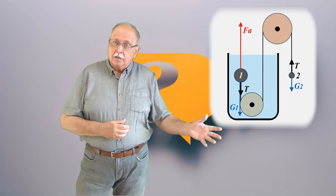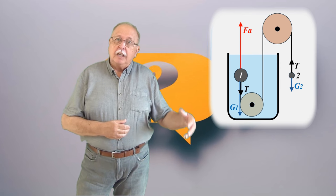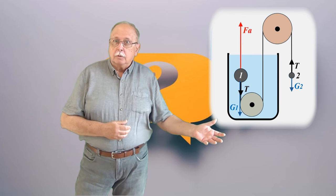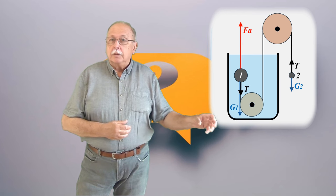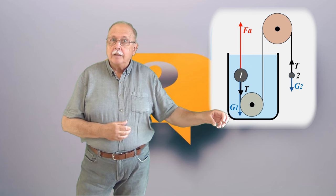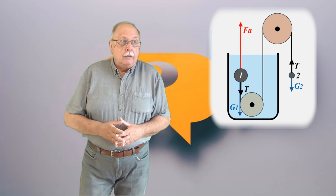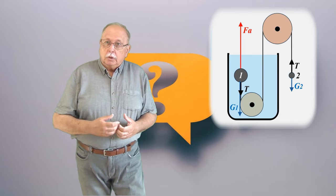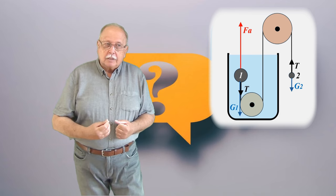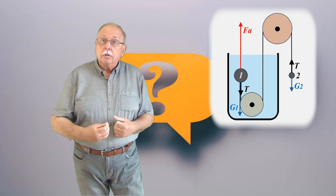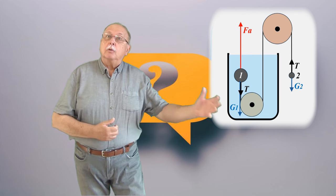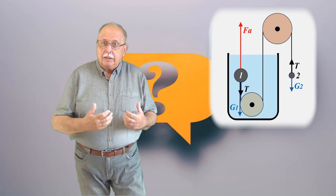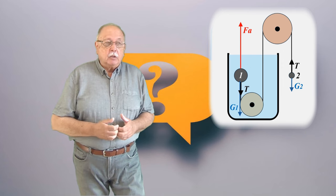Iar asupra bilei din aer acționează greutatea ei și tensiunea din fir, care trebuie să fie egală cu greutatea, deoarece suntem la echilibru. Bila este în repaus. Firul este întins, deci trage bila 1 în jos, iar forța cu care face acest lucru este egală cu greutatea bilei 2, bilei din aer.